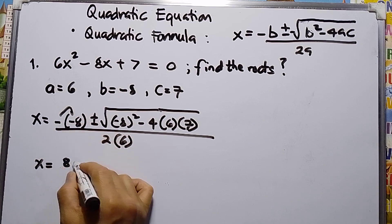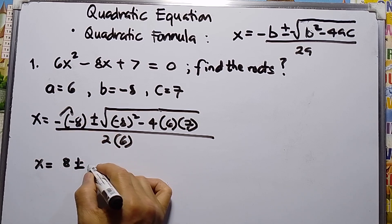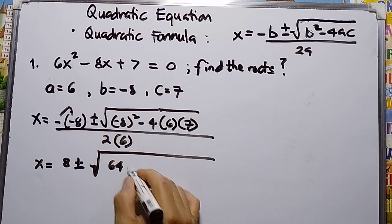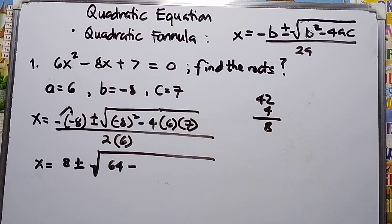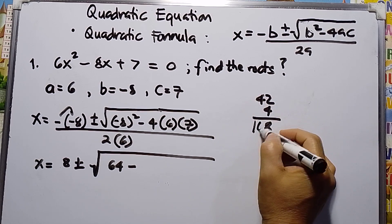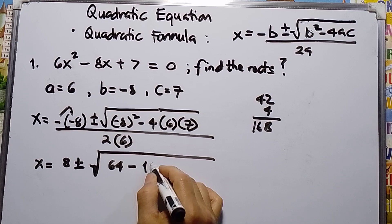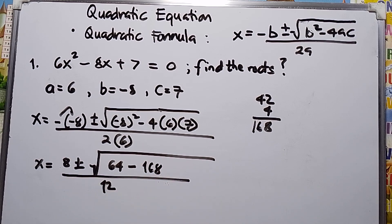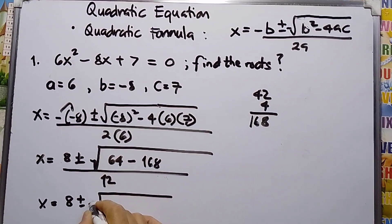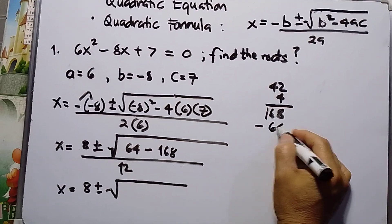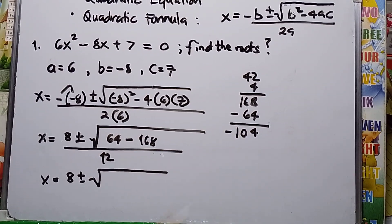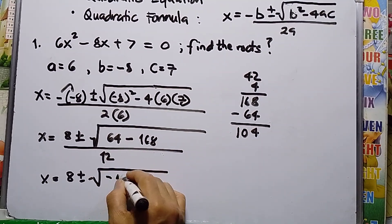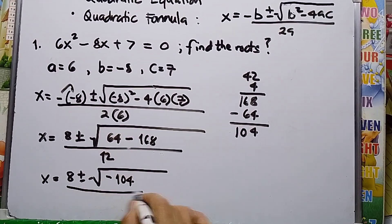This simplifies to x equals positive 8 plus or minus square root of 64 minus 4 times 6 times 7. Now 4 times 6 is 24, times 7 gives 168. So we have 64 minus 168, which is negative 104, all over 12.